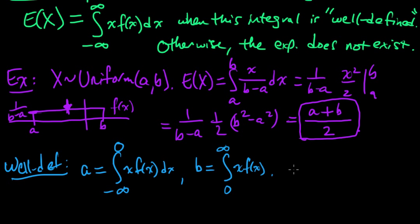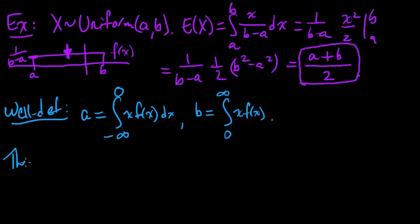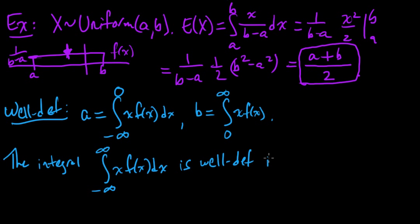So we define these two quantities, a and b. And we say that the integral, this integral, is well-defined if either a or b is finite. Just like in the discrete case. So the discrete case, we broke it up into a sum over negative parts and positive parts. And this is just the same thing.